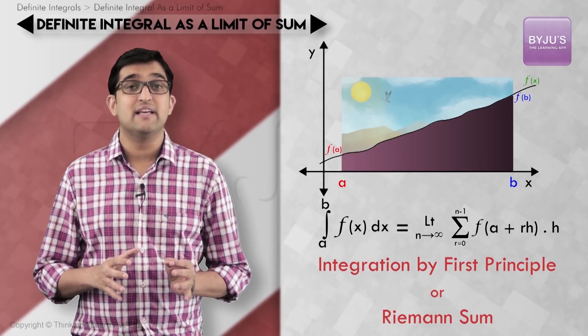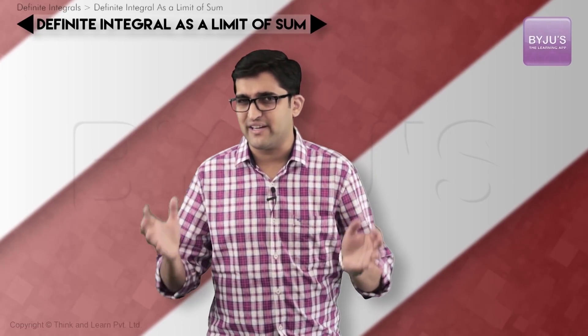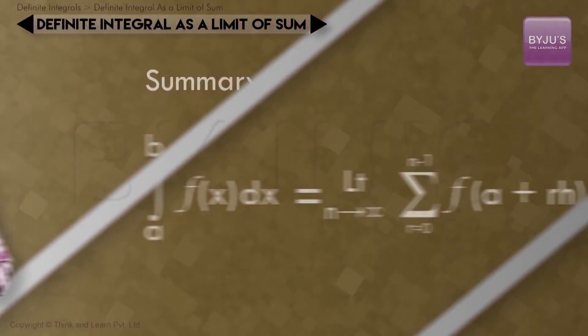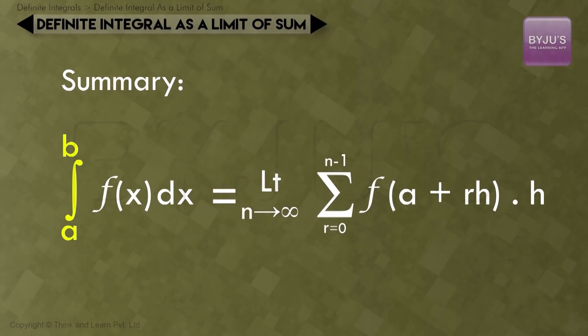So how can we summarize the idea of representing the area under the curve as the sum of infinite number of rectangles of infinitesimally small width? We can call it as: integral a to b, f(x) dx = limit n tends to infinity, summation r varies from 0 to n-1, f(a+rh) × h.